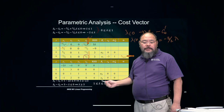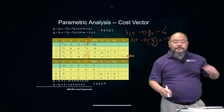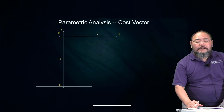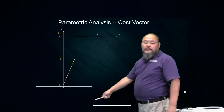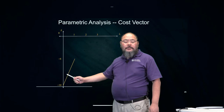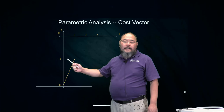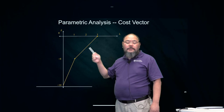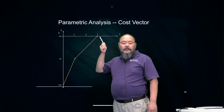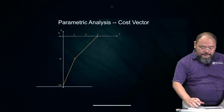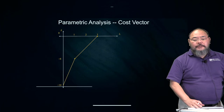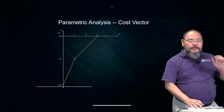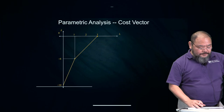Looking at the change of the objective: at lambda equals 0, we are at negative 14. As lambda increases to 1, Z becomes negative 6. From lambda 1 to 3, the slope changes slightly, and Z reaches 0 when lambda exceeds 3. This shows what happens when the cost vector changes parametrically along C prime. This objective function as a function of lambda is always concave, and we ask you to find out why.